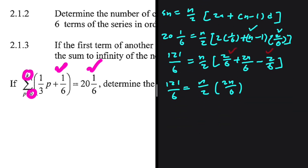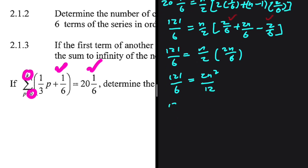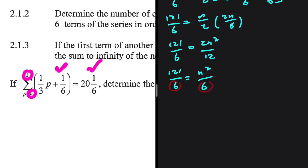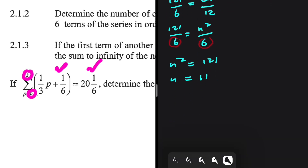We get 121/6 equals (N/2) multiplied by (2N/6), which simplifies to 121/6 equals N squared/6. Dropping the 6s from both sides, N squared equals 121. So N equals positive 11 — we cannot have a negative number of terms. We have 11 terms, which means K equals 10.